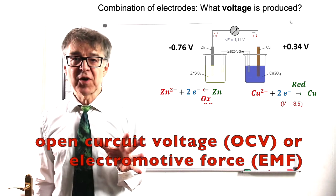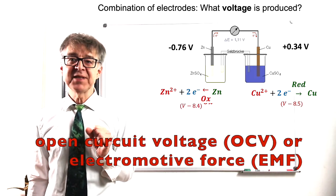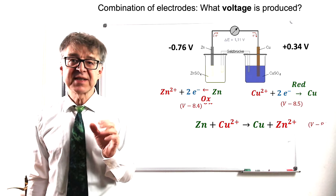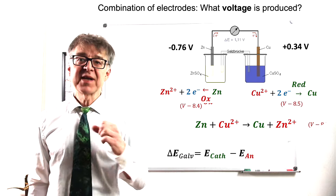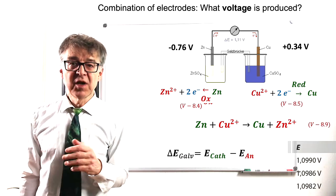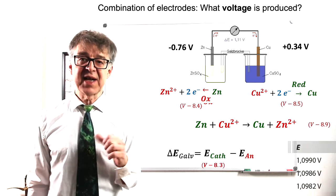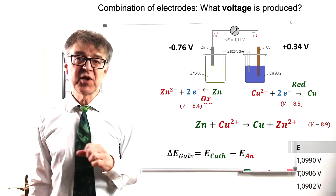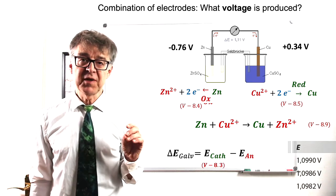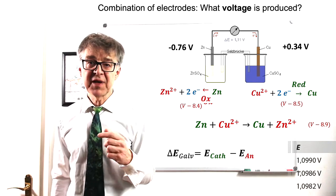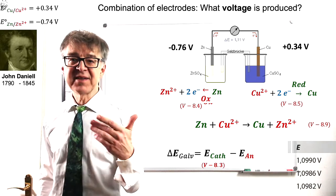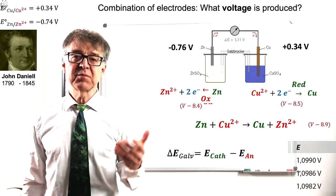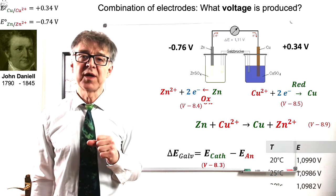The open circuit voltage of the galvanic element can be calculated as a difference between the individual electrode potential E sub cathode minus E sub anode. So, for the standard Daniel cell, we get an open circuit voltage, OCV for short or EMF, electromotive force, of 0.34 minus negative 0.76 equals 1.1 V.